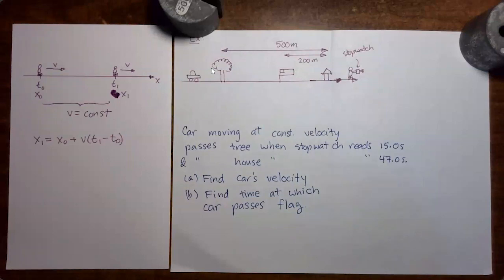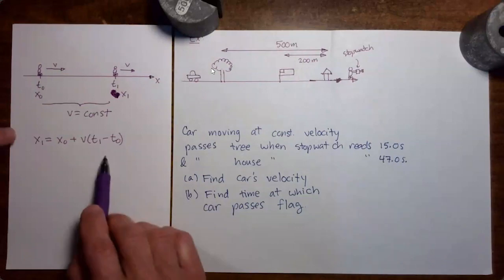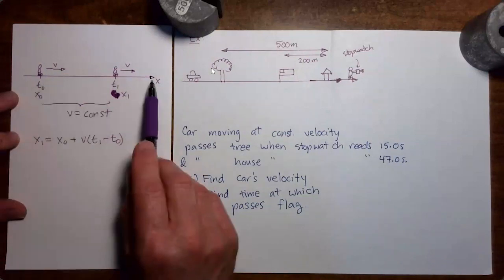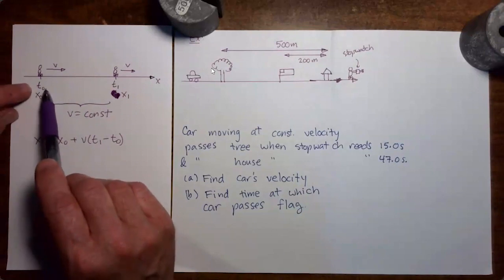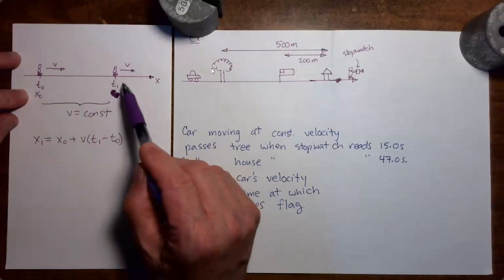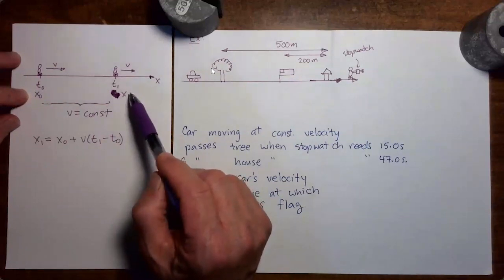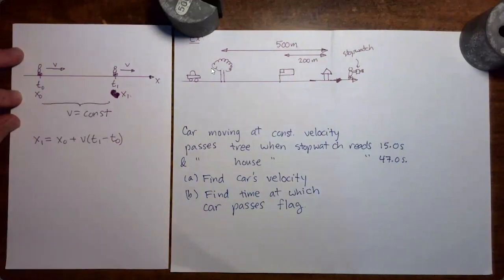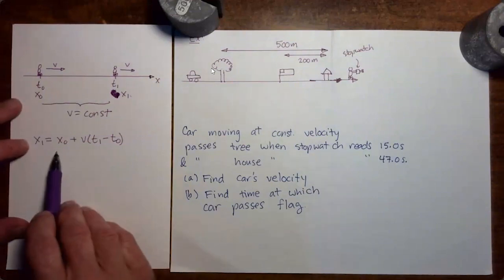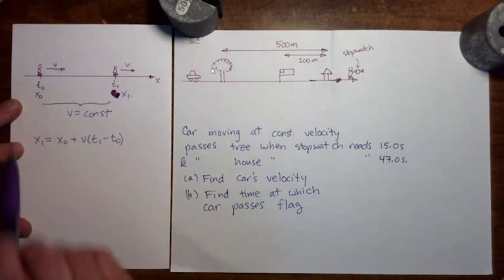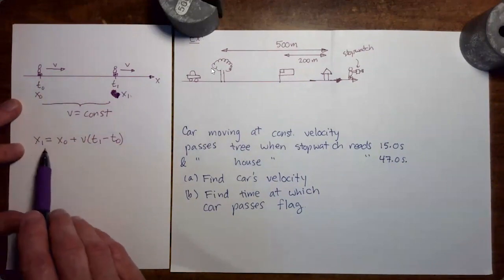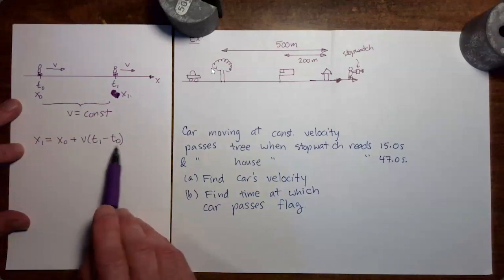In the previous video, we derived our first kinematics equation. This equation describes an object moving along a straight line with constant velocity. At time t0, the position of the object is x0; at time t1, the position is x1. In between, the object moves with constant velocity — moving in a straight line without getting faster or slower. This gives us x1 equals x0 plus the velocity times t1 minus t0.